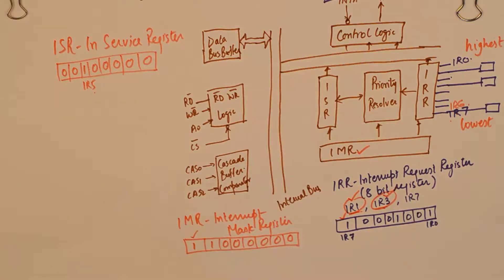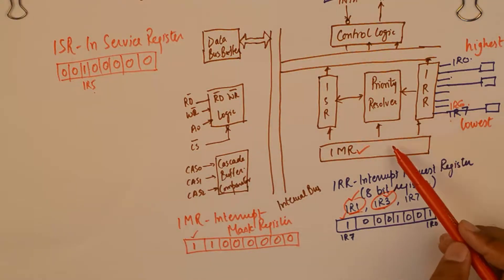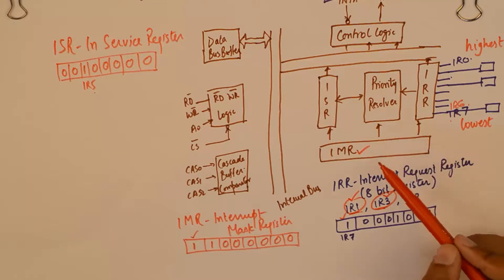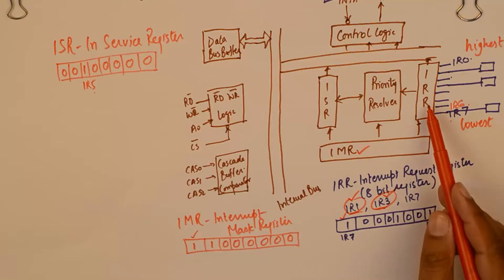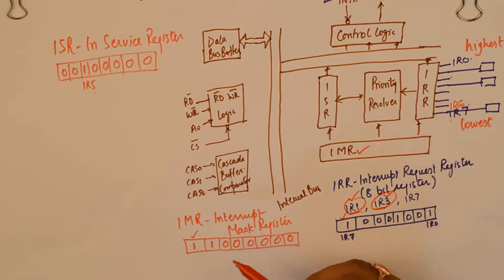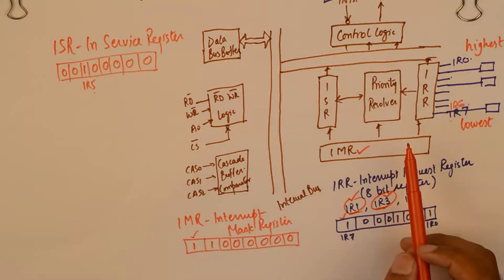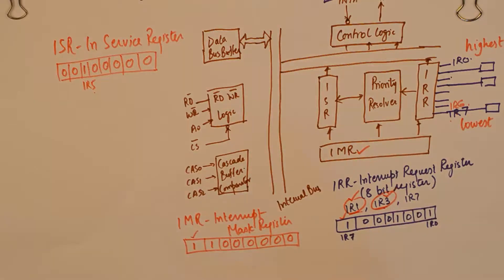So it will subroutine IR5 to its vector location and start servicing IR1. Then it will follow to service IR3 and then IR5 will be returned back to resume its services. So that is how the three registers inside the 8259 interrupt request register, interrupt mask register and in service register work in tandem. And priority resolver is the block is the heart of the programmable interrupt controller which checks all these registers and finally decides which interrupt should go.